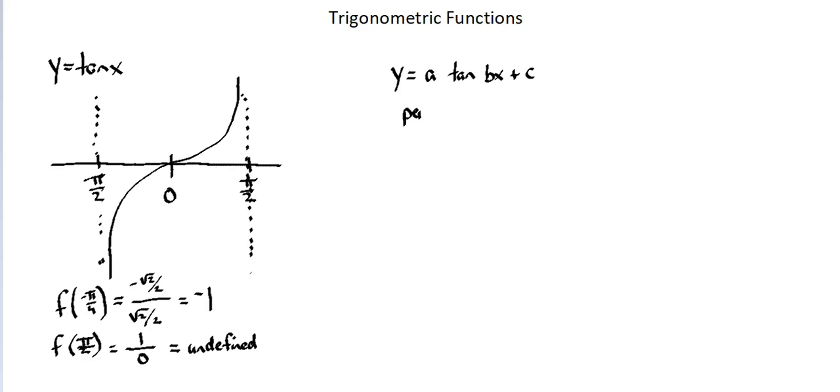But there is a period. Period is pi over b, not 2 pi over b as we saw with sine and cosine, but pi over b for tangent. And then our vertical displacement, or the principal axis, is the value c.